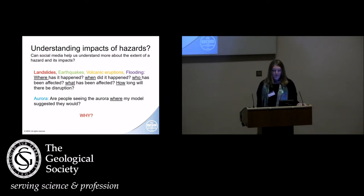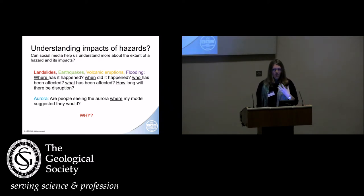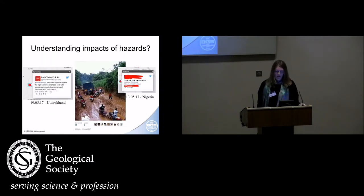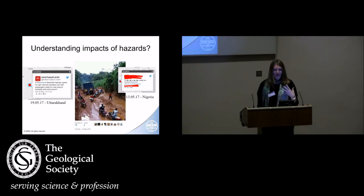What we're trying to explore here is whether social media can help us understand more about the extent of a hazard and its impact — landslides, earthquakes, volcanic eruptions and flooding. Perhaps we should include tsunamis as well. So: where has it happened, when did it happen, who has been affected, what has been affected, and how long will there be a disruption? Often with Twitter there are pictures as well, so we can see that the road really is not passable. If you have that back in your operations centre, that's quite a useful sign.